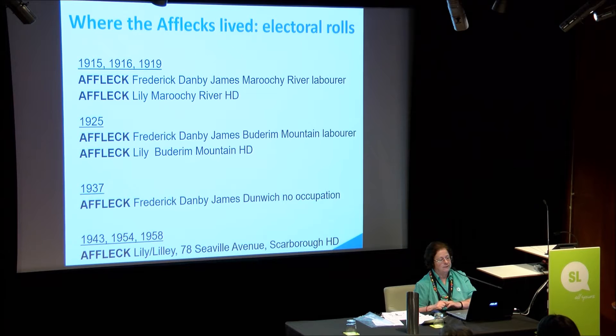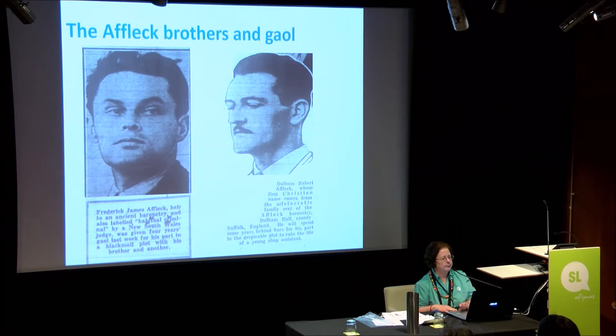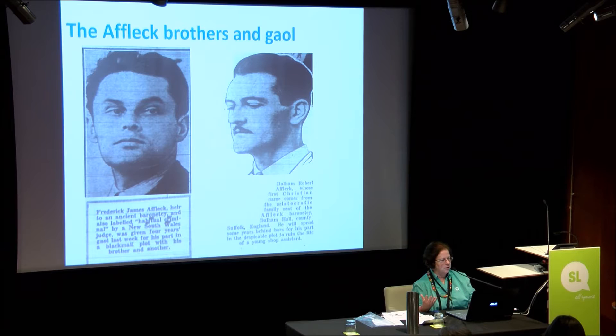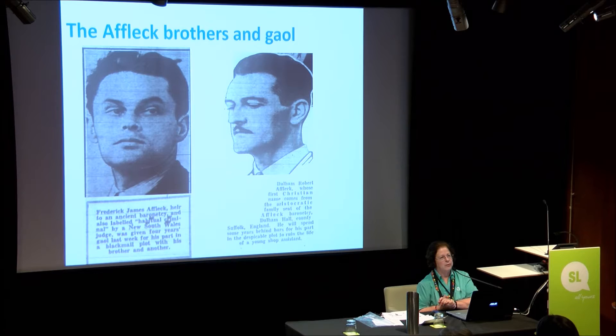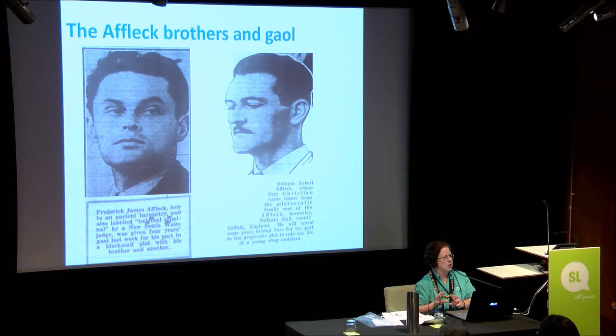Frederick Danby James came out as a steward — one of those people who didn't really manage his affairs well. He won one Tattersall's, bought a Queen Street property, it went bust, and basically was just running little farming things. We see him at the Maroochie River, then at Budrum, then sadly ending up at Dunwich, virtually blind. We find Lily at Seville Avenue, Scarborough — a very modest arrangement. These are the two sons. Frederick James Affleck, heir to a baronetcy, had a huge criminal record. A New South Wales judge said he was in a blackmail plot and was a habitual criminal. And there was a second brother, Dalham Robert. They're making much of the aristocratic background to counterpoint this seedy operation.